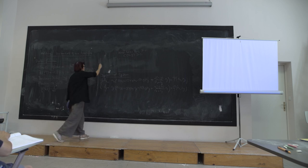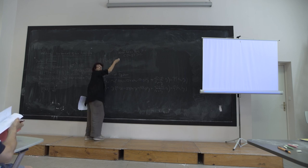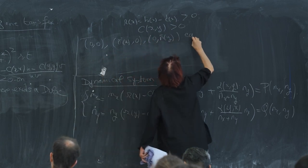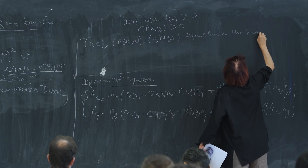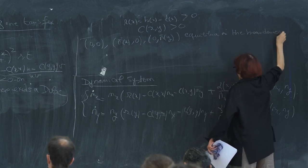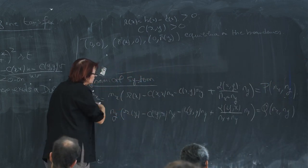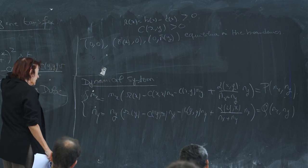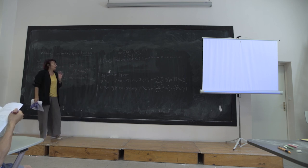The second remark is that we can prove that on the boundary the only equilibria are (0,0), (N̄_x, 0) and (0, N̄_y) — we already introduced this notation. If we study these boundary equilibria there is a function which will help to characterize their stability, and we can construct this function exactly as we did for the Lotka-Volterra system.